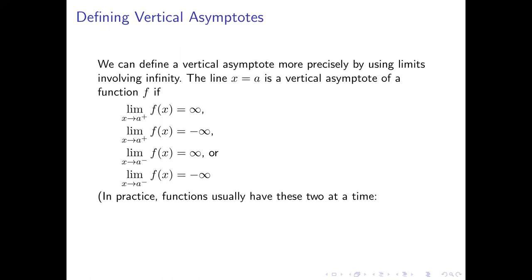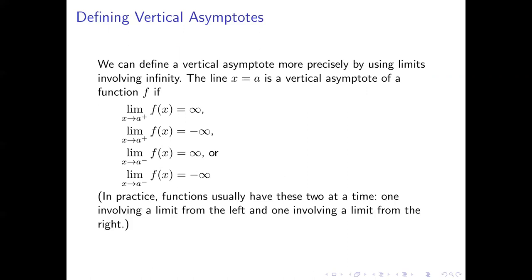Any one of these four conditions is enough to make the line x equals a a vertical asymptote of the function. In practice, most functions have two of these at a time — usually one involving a limit from the left and the other involving the limit from the right. There are some functions where you only have one or the other, but most of the time you'll have both: an infinite limit approaching from the left and an infinite limit approaching from the right.